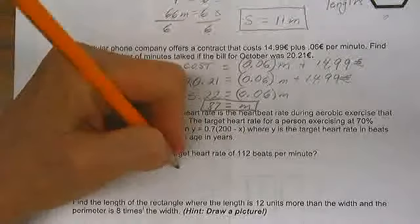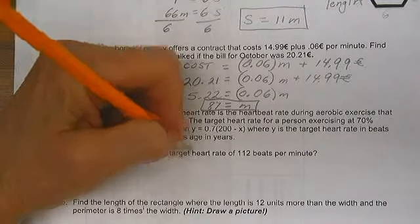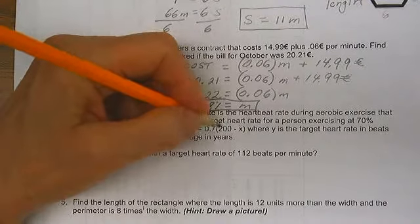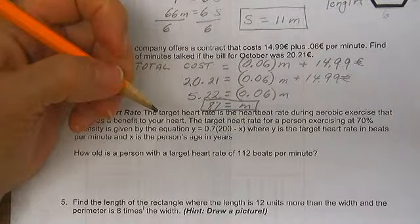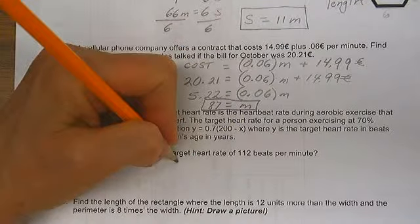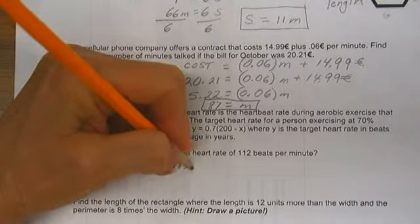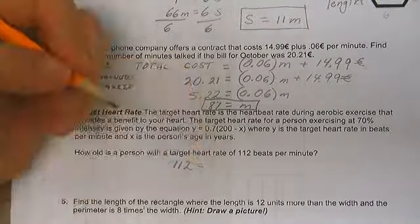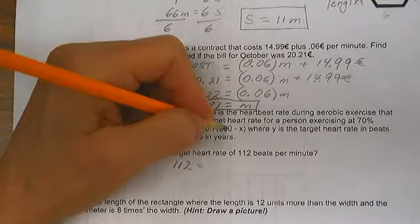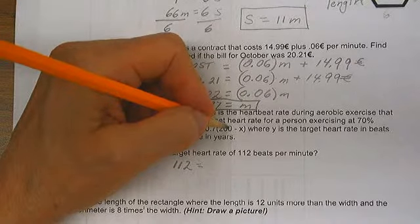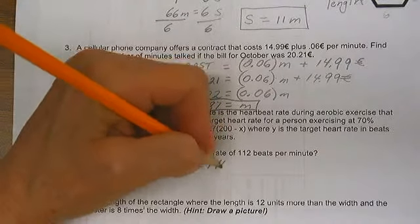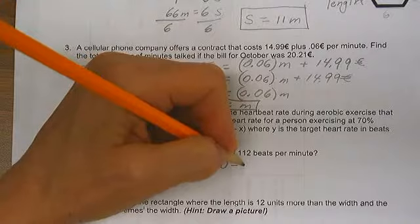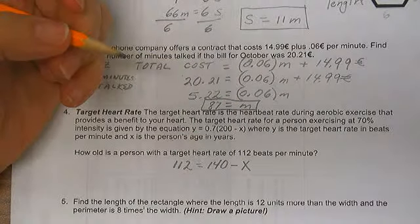If we have y equals 0.7 times the quantity 200 minus x, and we know that 112 is the target heart rate, then 112 equals 140 minus 0.7 times the person's age.